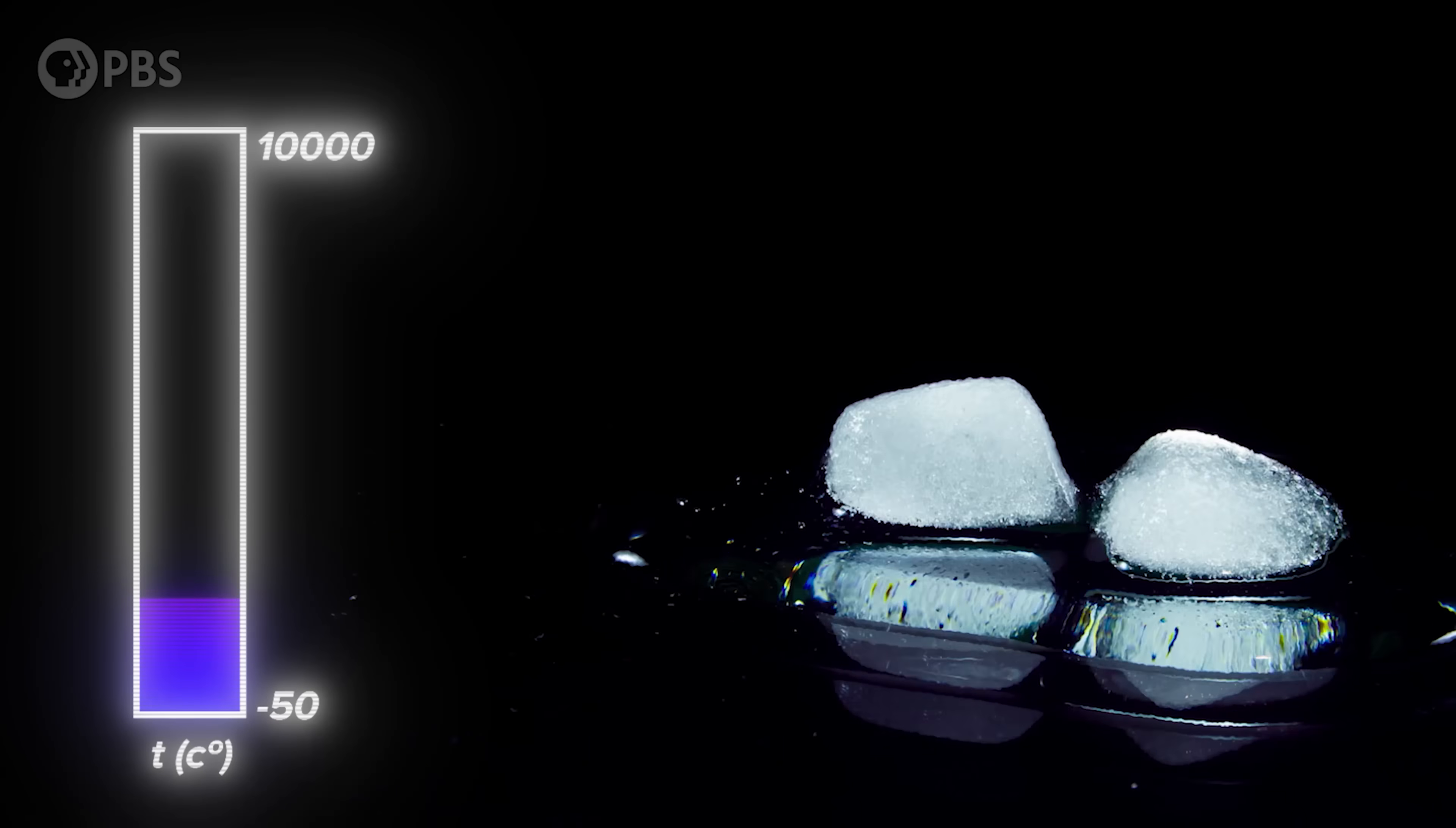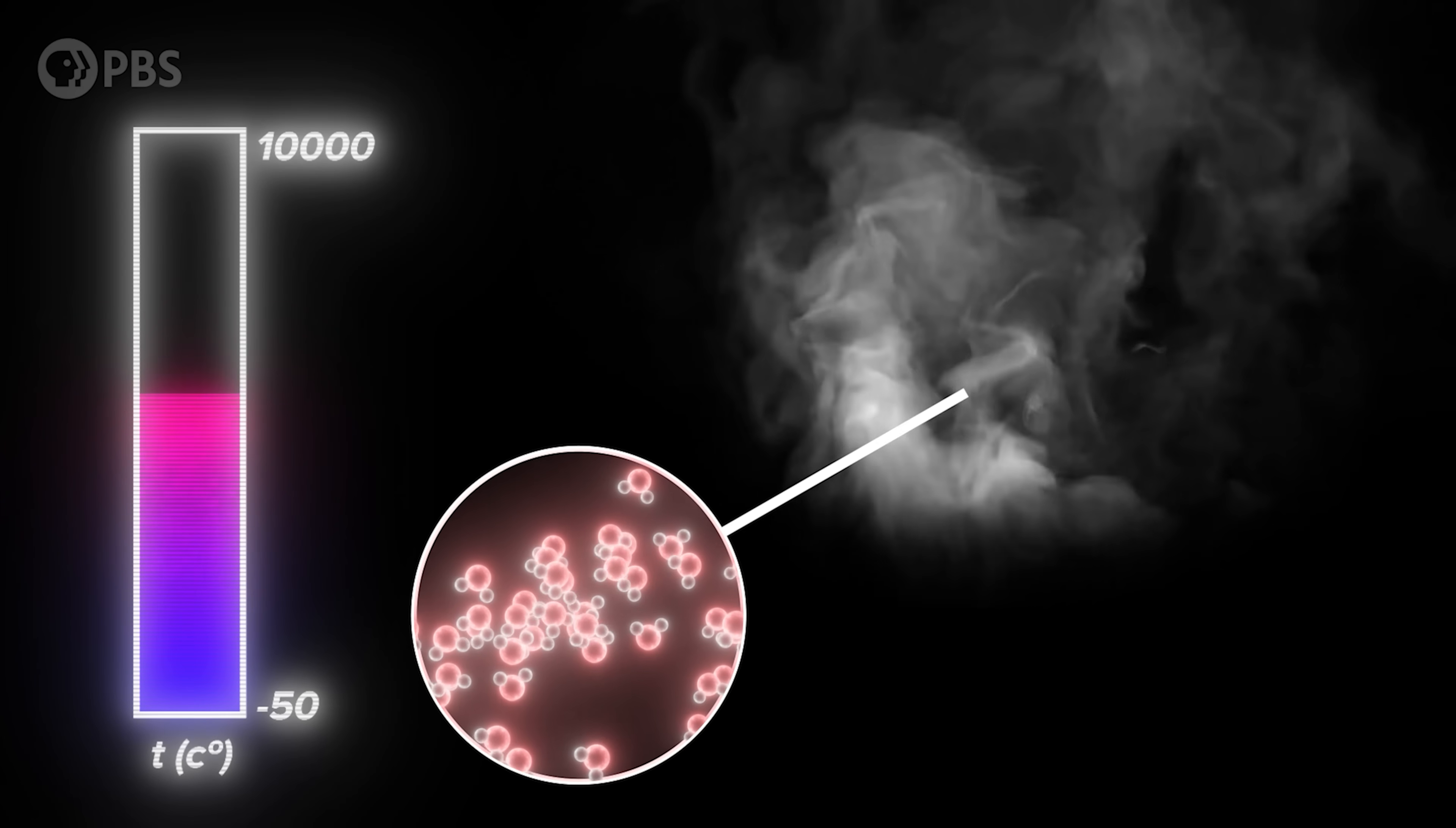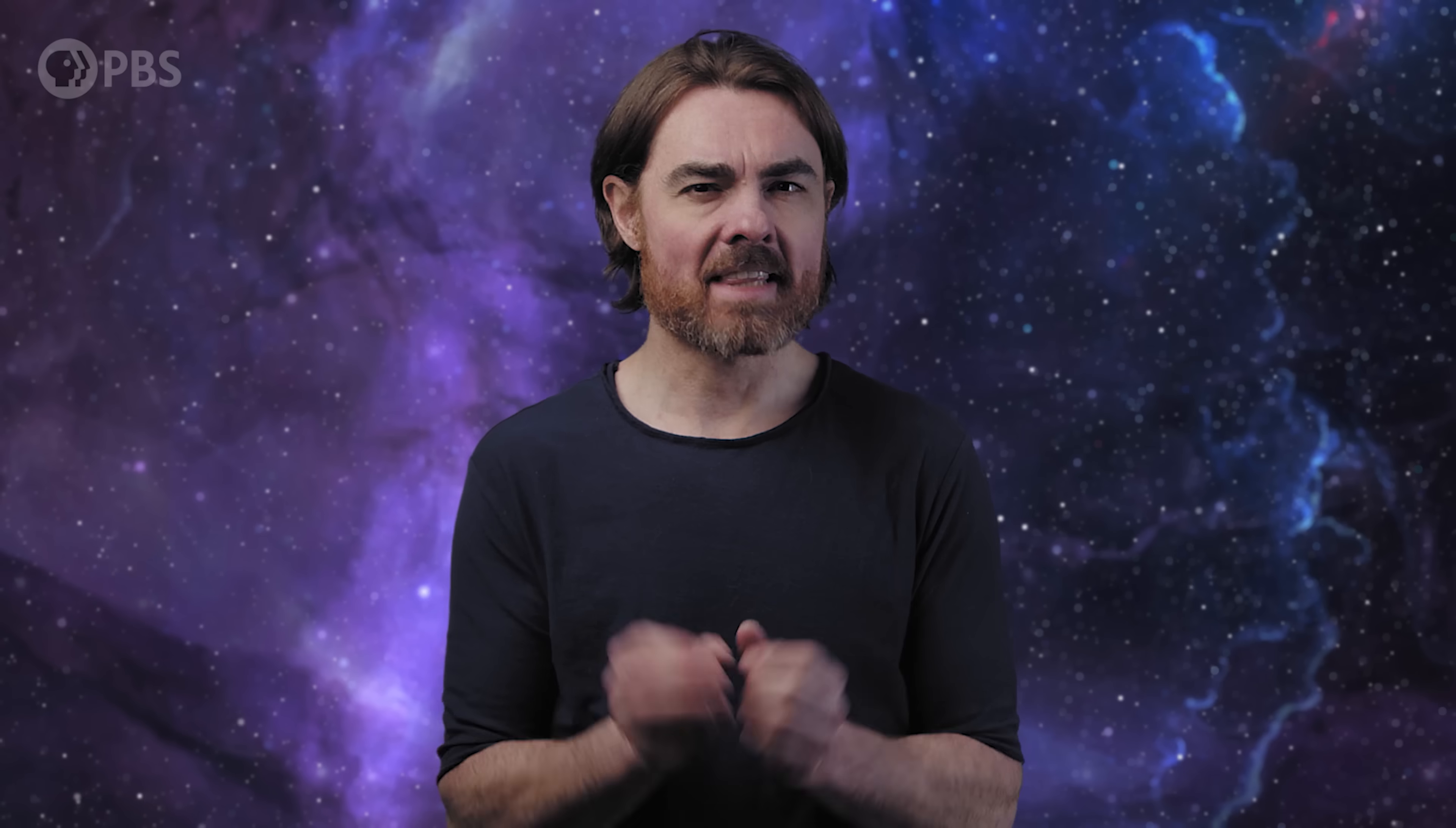Heat up ice and it melts. Keep heating the water and it vaporizes. More heat still, and that water vapor ionizes into plasma. But that's not the final phase transition. Keep heating until you hit temperatures of the extremely early universe, and a phase transition occurs in the quantum fields that underlie all particles.